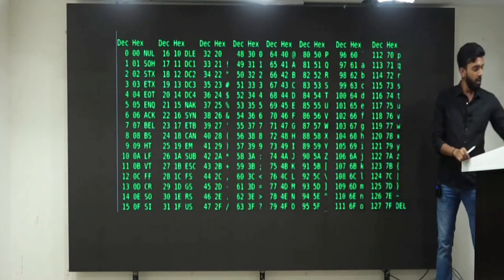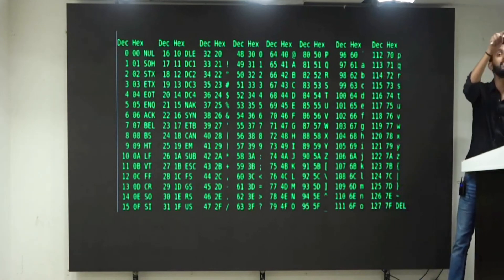One caret symbol is there in your keyboard. If you press shift and 6, on top of 6, you will see there is a caret symbol. Clear till here?